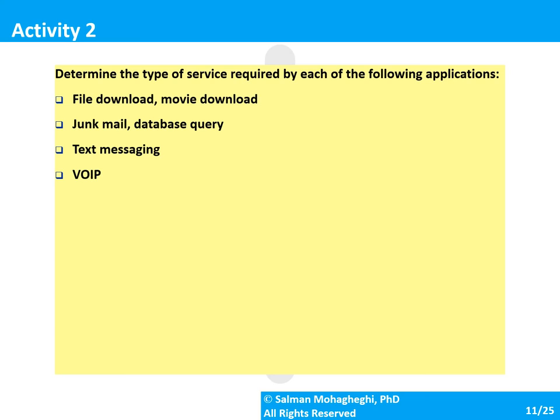For file download and movie download, what's important is that all packets are sent in order, none are lost, and none are duplicates. As a result, you would want a connection-oriented approach. It's also beneficial for the receiver to acknowledge each received packet so the sender doesn't have to resend it. So for file and movie downloads, we typically use reliable, connection-oriented transmission services.